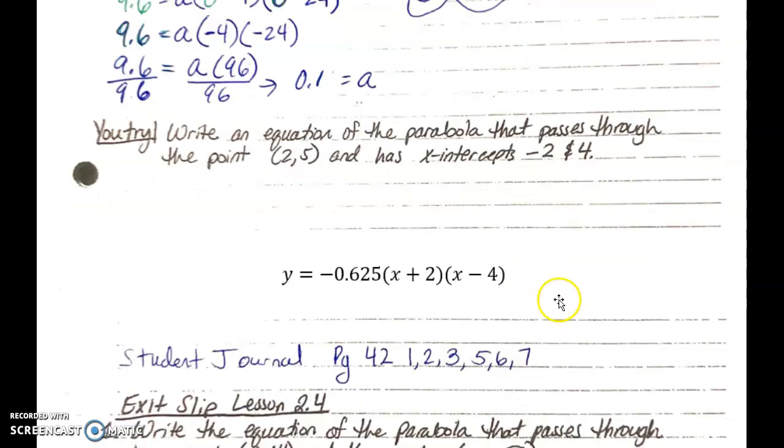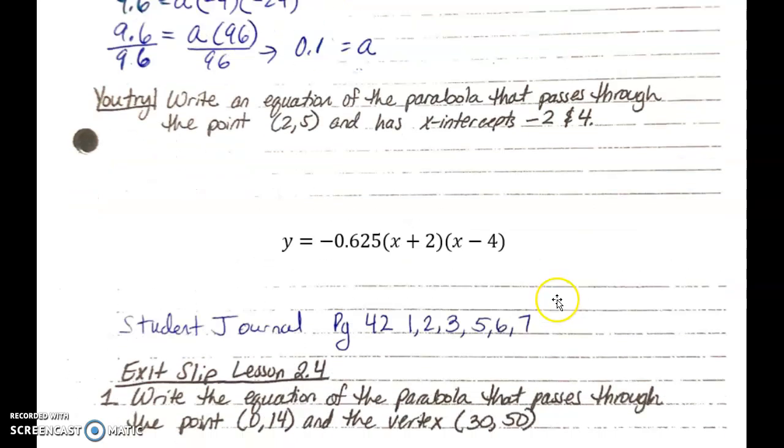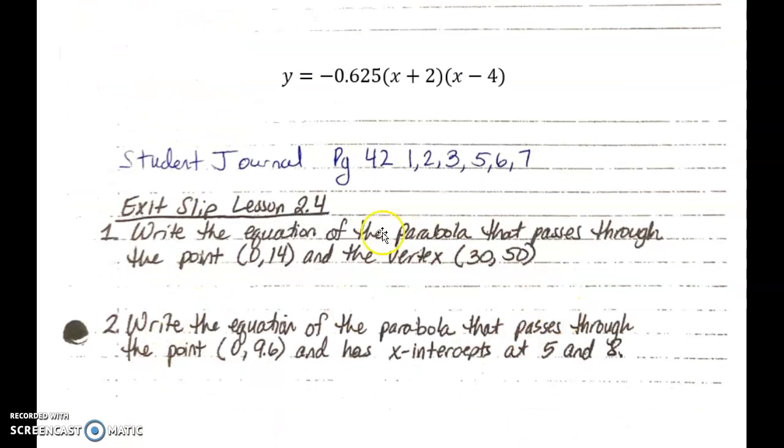From here, if you have a good standing on this, you can go ahead and begin your exit slip. If you feel like you need more practice before you do your exit slip, you may begin your student journal assignment on page 42, numbers 1, 2, 3, and 5, 6, 7. Now, this assignment is due on Thursday. This is not optional. But it is optional to either do it before your exit slip or after your exit slip. That's the optional part.